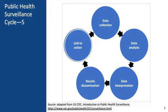Who acts? Action could be at an individual level, but typically we're looking for action at a systemic level. We're looking for public health agencies to introduce new policies or programs, and for people in a position to change public health or medical practice to do so based on the data and results from our surveillance system. That's our ultimate goal. You'll notice that the link to action goes back to data collection — so we're right back where we started, because it's a cycle, not just a line.